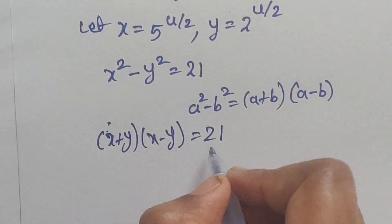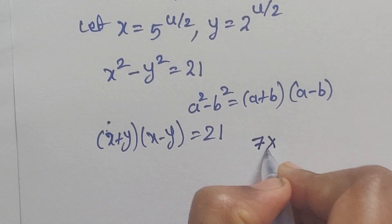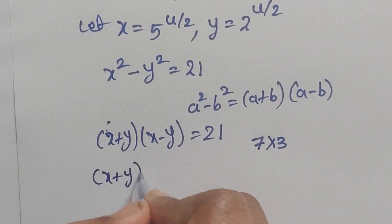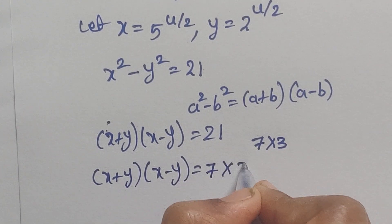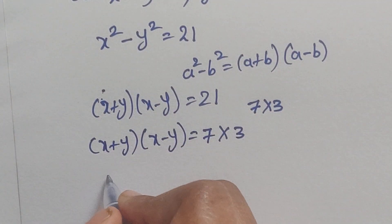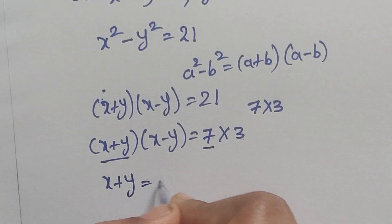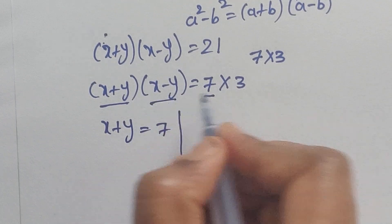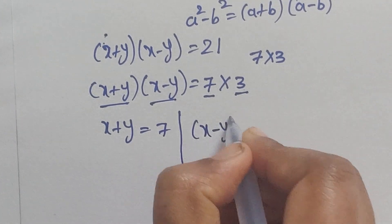What are the factors of 21? The factors of 21 are 7 times 3. So (x plus y) times (x minus y) equals 7 times 3. Splitting these into two parts: x plus y equals 7, and x minus y equals 3.